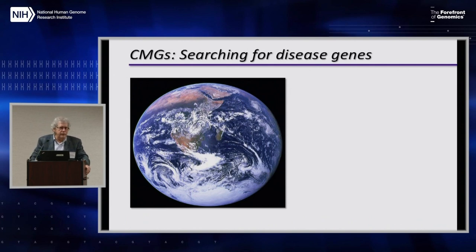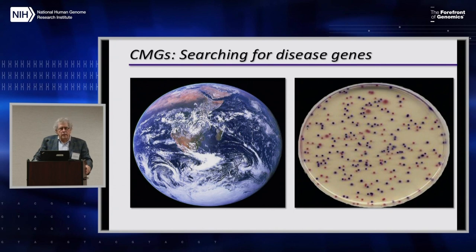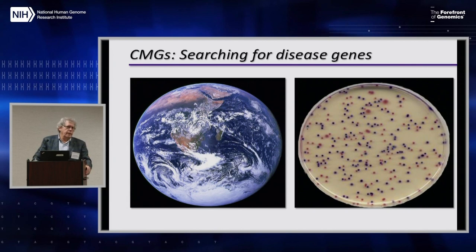This is the way I think of the CMGs: we're looking at the entire population of the world, searching for patients with rare and unexplained phenotypes. Each of these families represents almost like a colony of cells on a bacterial plate — each one is an example of Mother Nature trying to tell us something. Each one is both a challenge to figure out what is being said, and an opportunity to learn from the patient something about biology and medicine, hopefully something beneficial to the patient and their family going forward.